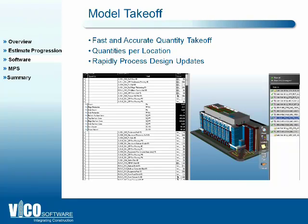Something worth noting about the quantities: we call them construction caliber quantities. Many CAD systems already produce quantities, but ours are specifically what an estimator needs. For example, volume may be useful, but if you want the formwork area of a column — the vertical surface area — and you take what the CAD system calls surface area, you'll also get the top and bottom of the column as part of the quantity, which isn't accurate. So we've developed our own algorithms which we run on any imported CAD system model to produce the types of quantities which are genuinely useful for estimators.